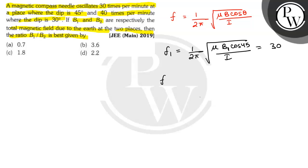F2 is given by 1 by 2 pi root under mu B2 cos 30 by I, which equals 40 times per minute.